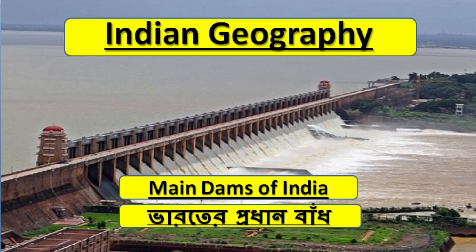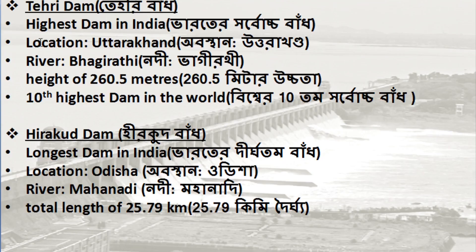Today we will talk about the major dams of India. First, let's look at the table. The third dam listed is the highest dam in India. The height is 260.5 meters.